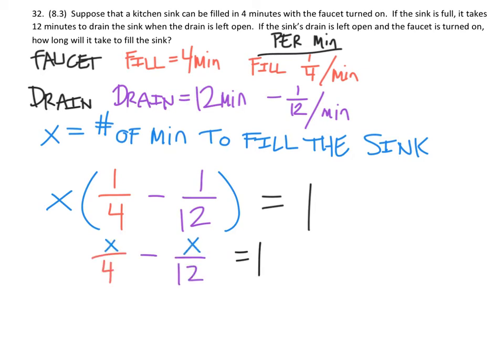So if we distribute that x, then we get this new equation right here: x over 4 minus x over 12 equals one. But since these are fractions, what we need right here is common denominators, and our lowest common denominator is 12.